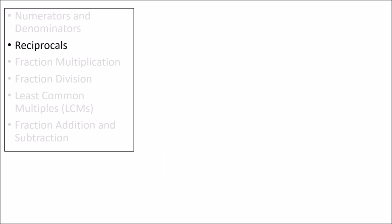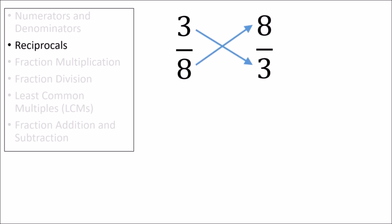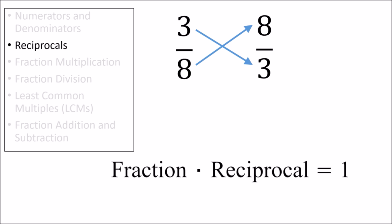An important concept of a fraction is its reciprocal. To find the reciprocal of a fraction, we flip the numerator and denominator. For example, here we have the fraction 3 eighths. We can find its reciprocal by having the 3 and the 8 change places, giving us the fraction 8 thirds. Reciprocals also have the property that the product of a fraction and its reciprocal is 1.